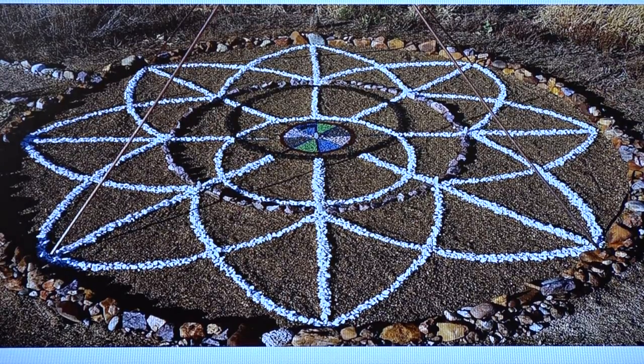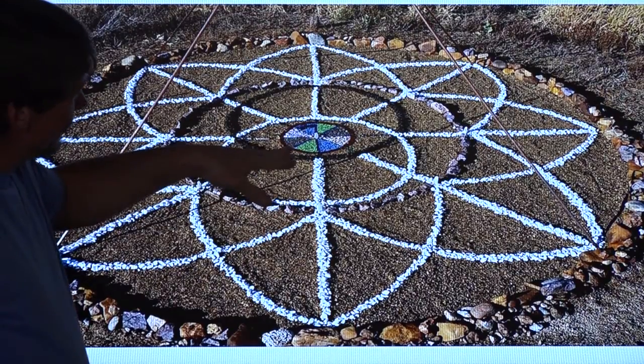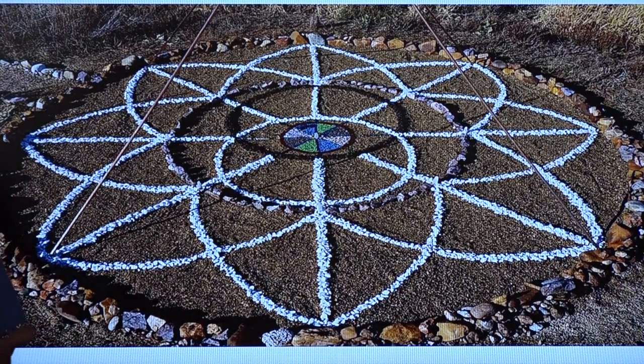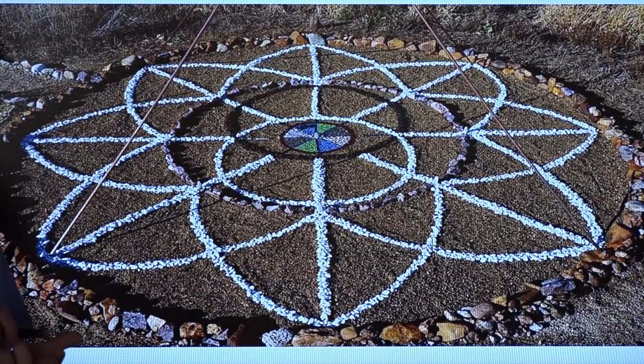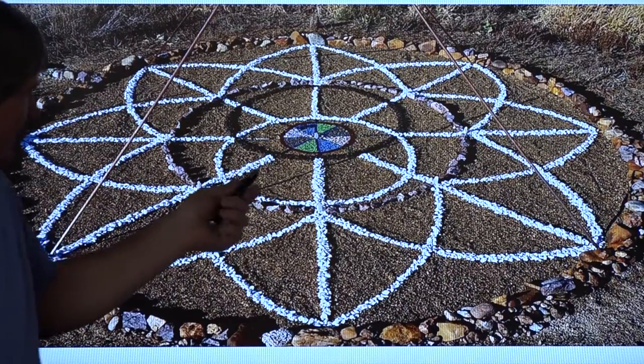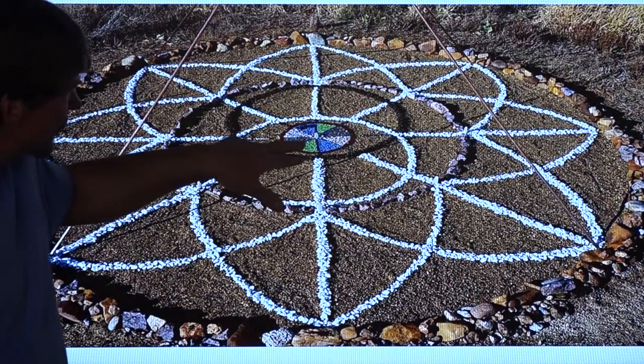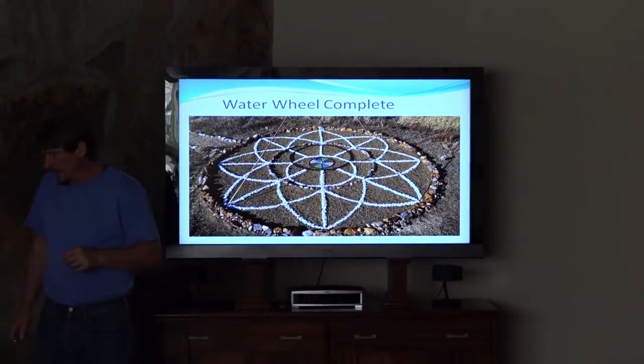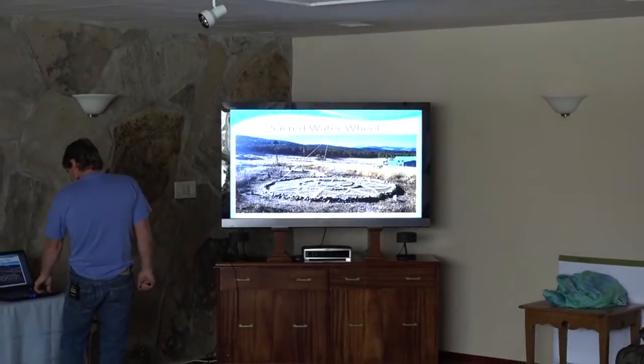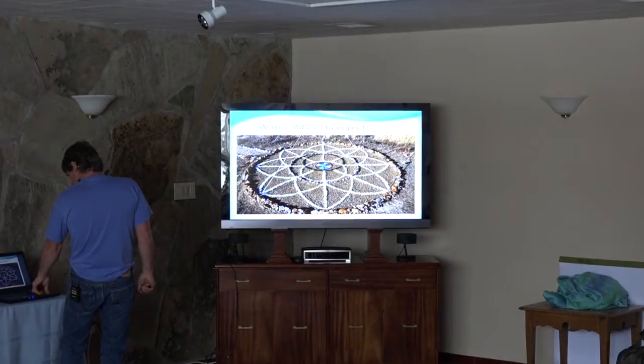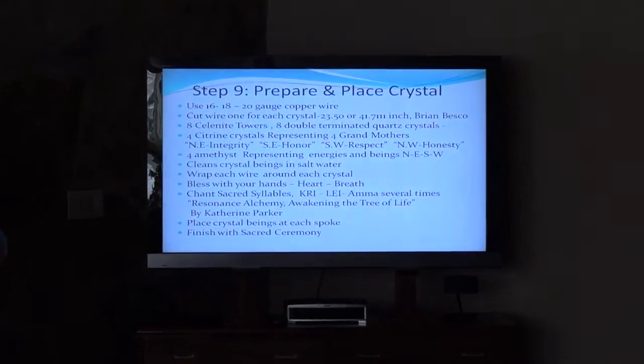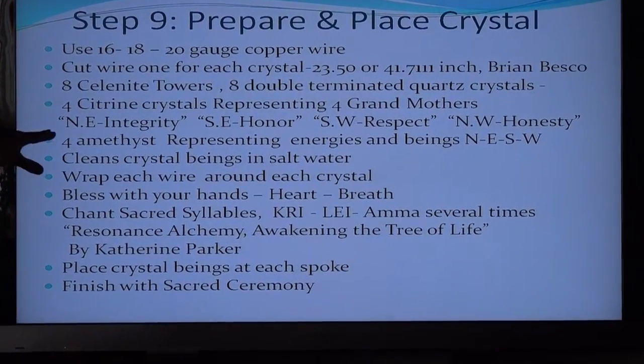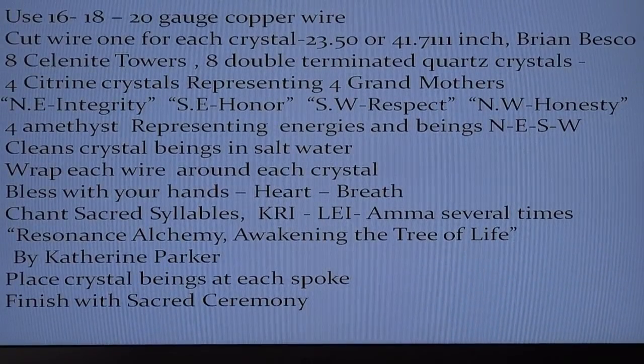This is the four grandmothers are your directions basically from the northeast, the southeast, the southwest and the northwest are a representation here of the four grandmothers. And I use four citrine quartz crystals going to those directions representing the four grandmothers. And again, my guidance told me to bring this in and it just definitely resonated with me. So here is about the four grandmothers and their representation. The northeast is integrity. The southeast honor, southwest respect, northwest honesty.